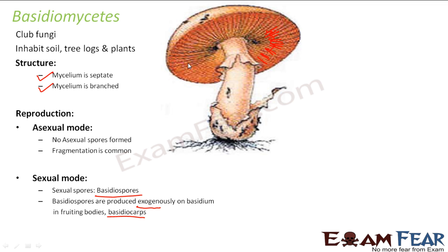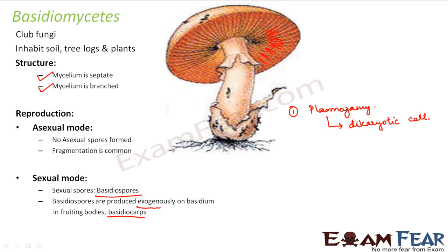Sexual reproduction involves the same three steps: plasmogamy, karyogamy, and meiosis. In the first step, plasmogamy, two cells of different mating types fuse together. The result is a dikaryotic cell — only the cytoplasm of the two cells fuses, so we have one cell with a common cytoplasm but two nuclei. At this stage, the basidium is formed.